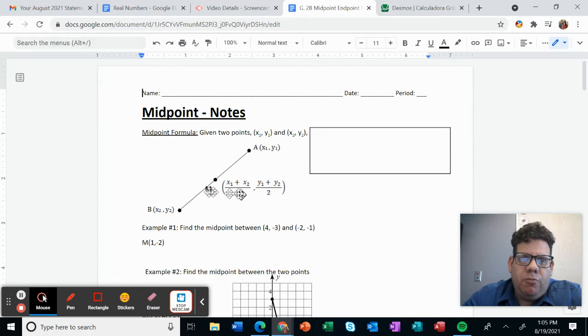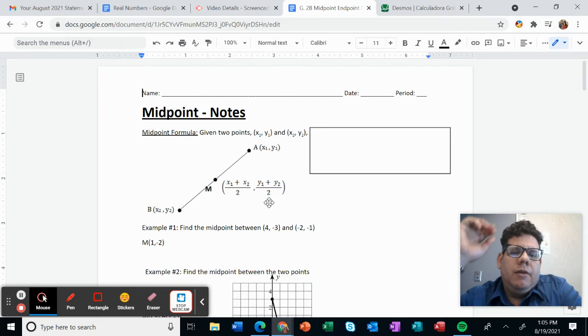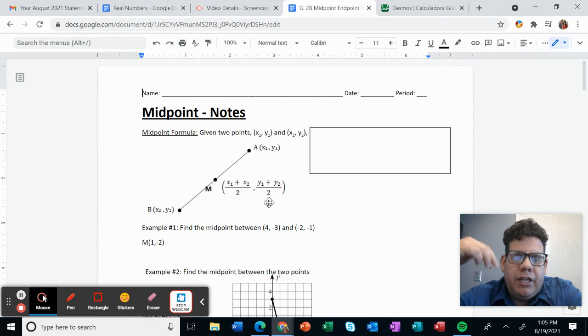We should use this formula that is X1 plus X2 divided by 2, comma, for Y is Y1 plus Y2 divided by 2. And when you use these formulas, you're going to get a couple of coordinates. One is for X and the other for Y.